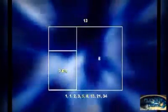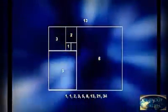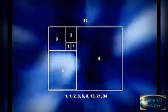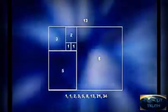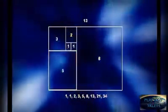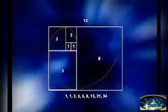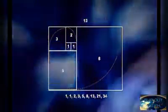A golden rectangle can be broken down into squares the size of the next Fibonacci numbers down. If we take a golden rectangle, break it down into smaller squares based on the Fibonacci sequence, and divide each with an arc, the patterns begin to take shape — we begin to see the Fibonacci spiral.